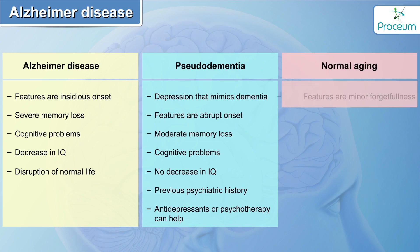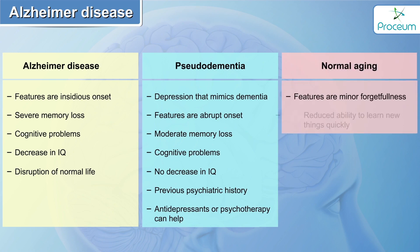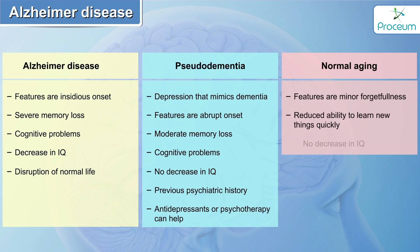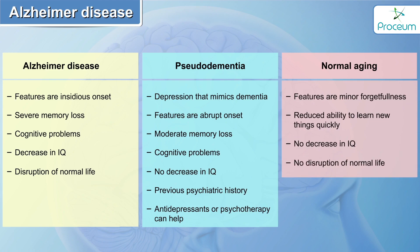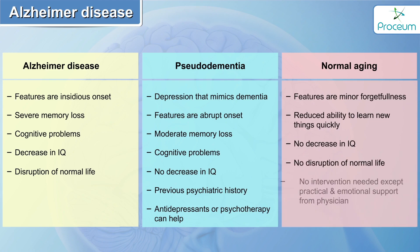In normal aging, there is minor forgetfulness that can present with reduced ability to learn new things quickly. There is no real decrease in IQ, no disruption of normal life, and hence no intervention is needed, except practical and emotional support from the treating physician and reassuring the patient.